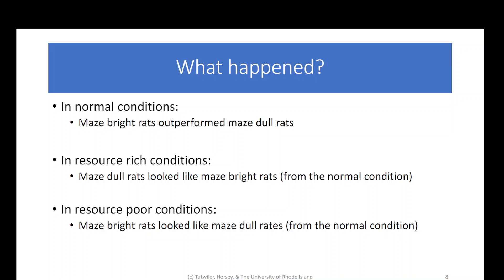Once you leveled the playing field and put a lot of resources in, there was no difference between the rats who were supposed to be dull and the ones who were supposed to be really bright. And then in the resource-poor conditions, the rats who were supposedly so bright ended up performing like the really dull rats. Literally, the super smart rats' performance went down and became like the supposedly dumb rats, just because they didn't have resources and they didn't have help.